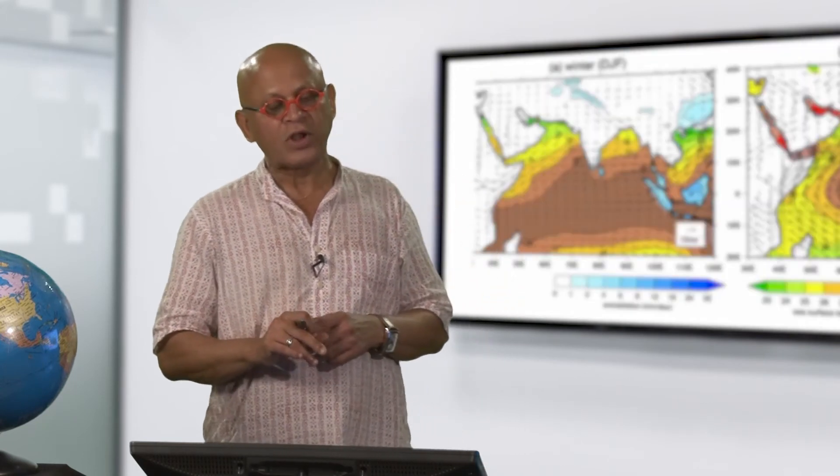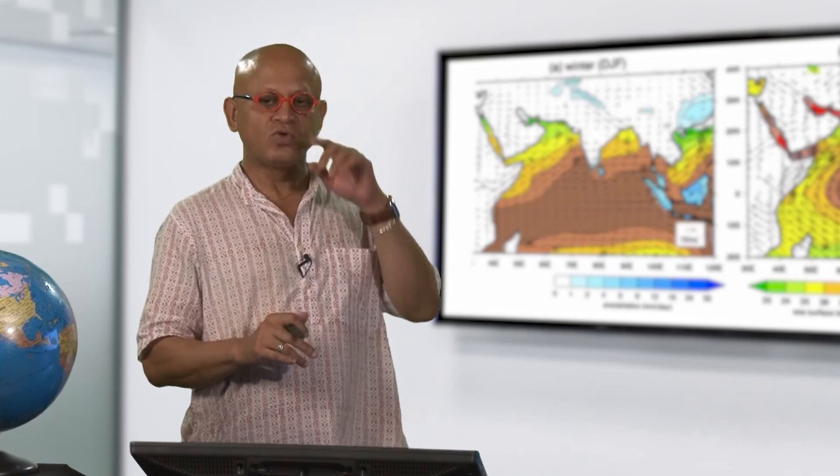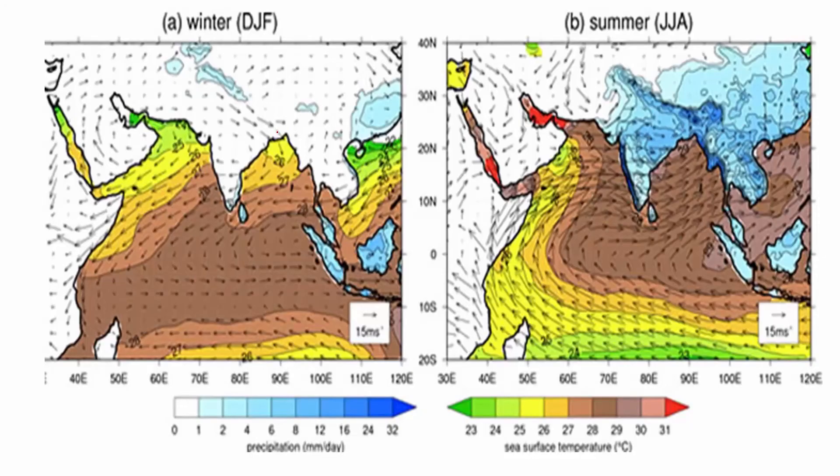So what is the Coriolis effect doing to the winds? So if you look at the winter months when the winds are going from high pressure on land to low pressure on the ocean, as they move, they want to move south. Coriolis will push them to the right in the northern hemisphere, so you can see that they are becoming north easterlies.